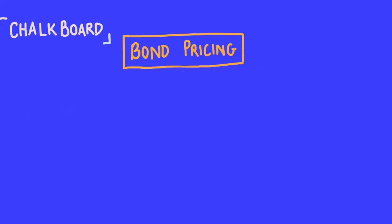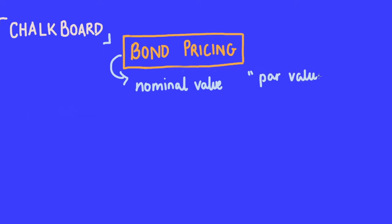Welcome back to Chalkboard Tutorial. Let's have a look at bond pricing and how it works. When a bond is traded at its nominal value — which is simply the value of the bond certificate — this nominal value is also commonly referred to as par value or face value. It's very important to keep in mind that all three terms mean the same thing.